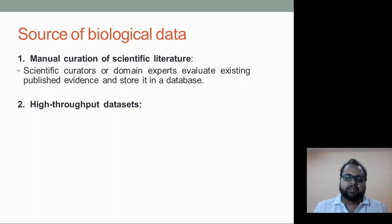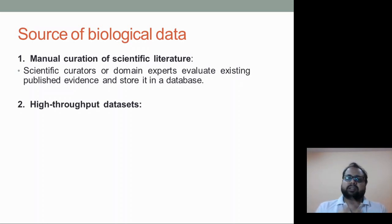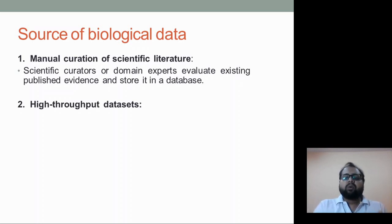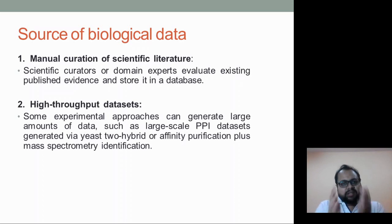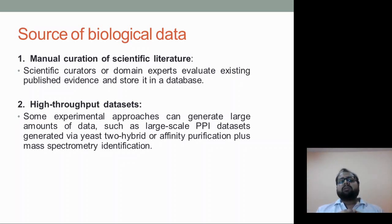The second source is high-throughput datasets. There are various experimental methods for analyzing protein-protein interactions, which include yeast two-hybrid, mass spectrometry, phage display, and others. When labs perform these methods and generate data, that data is compiled into a database. So a high-throughput dataset is essentially a database that compiles information obtained from all these experimental methods.